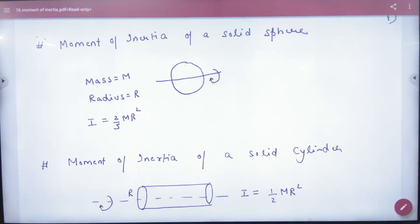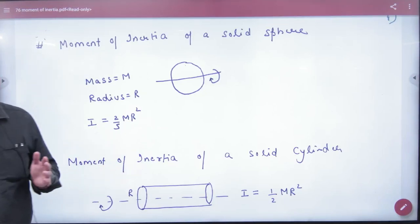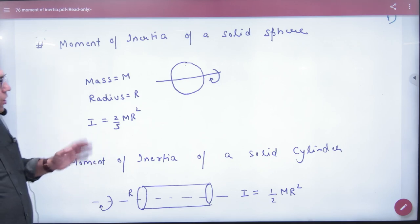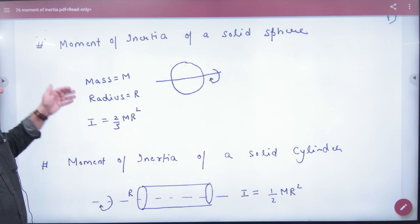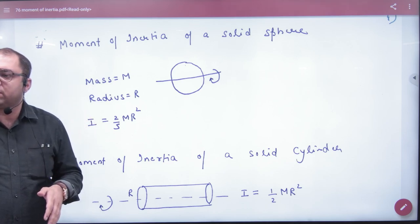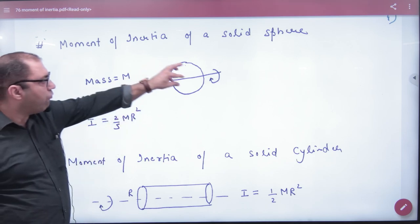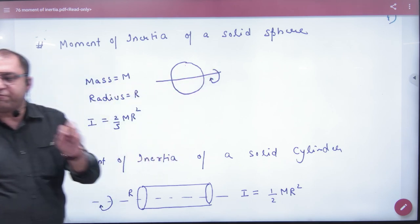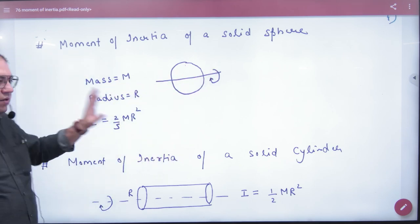Moment of inertia of a solid sphere. We will not do the proof, we will only do the formula. So moment of inertia of a solid sphere: if mass M and radius R, it means mass is distributed over the volume. If the axis is passing through the center, the formula is 2/5 MR².